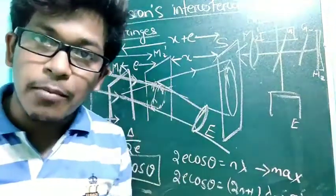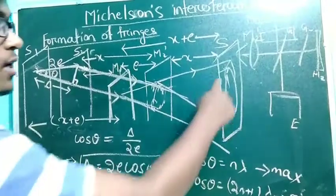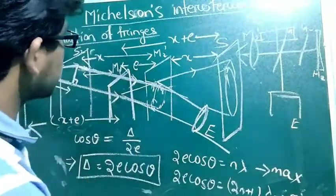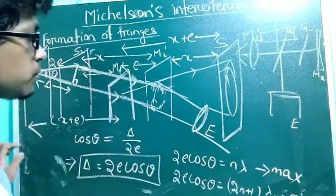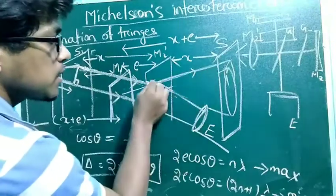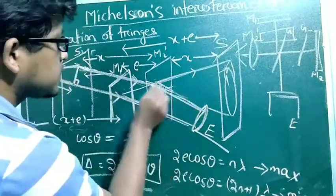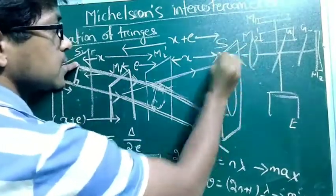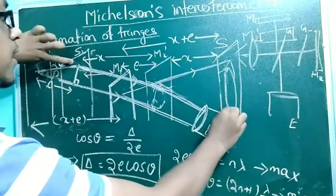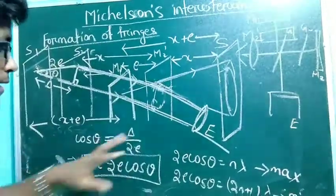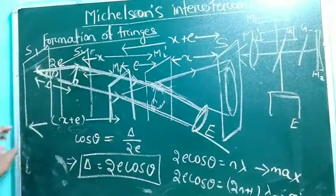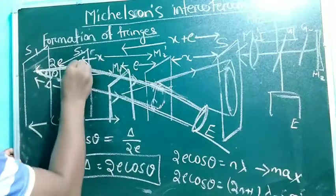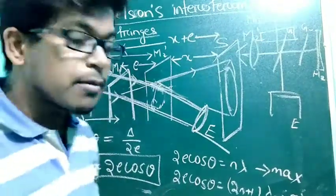This is very important. To summarize: I considered one source S, and two images S1 and S2 are formed — one by mirror M1 and one by mirror M2 dash. Sitting at the eyepiece, I observe as if lights are coming from S1 and S2. I extended the rays, derived the separation between S1 and S2 as 2E, then calculated the path difference delta = 2E cos theta, giving the conditions for maxima and minima.